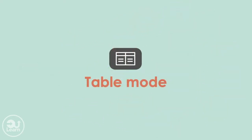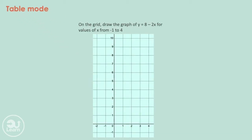The next trick is perfect for plotting graphs. We can quickly get the coordinates for a line equation by putting the equation directly into the calculator. For example, on the grid, draw the graph of y equals 8 minus 2x for values of x from minus 1 to 4.